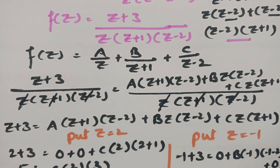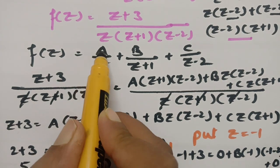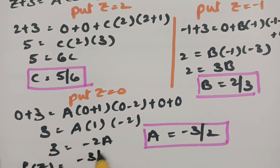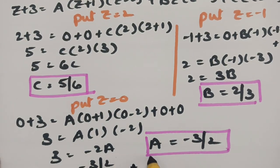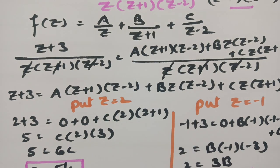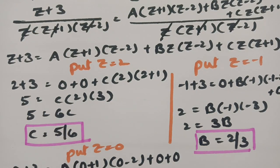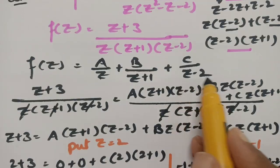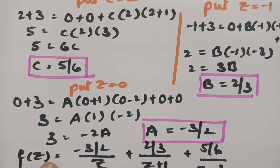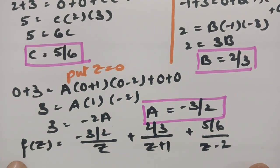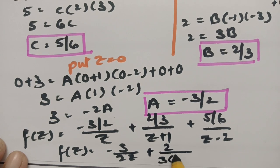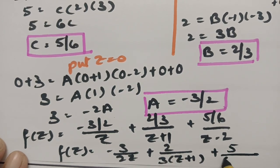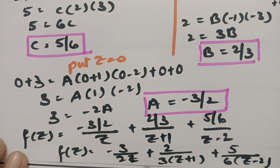Substituting the values, f(z) = -3/(2z) + 2/[3(z+1)] + 5/[6(z-2)]. This is our f(z) in partial fraction form.